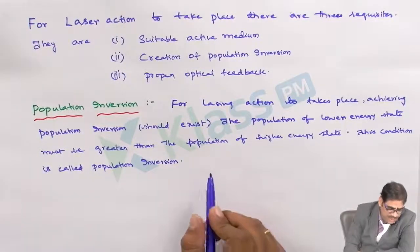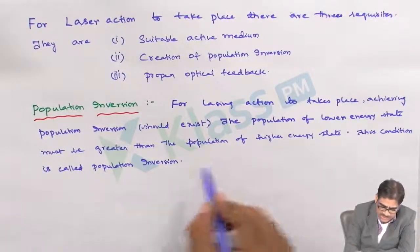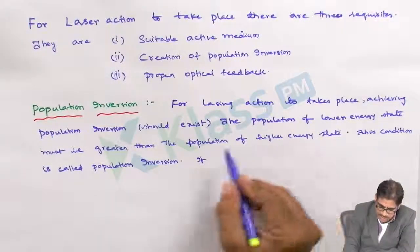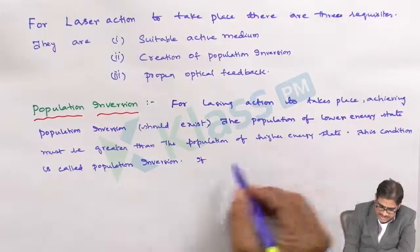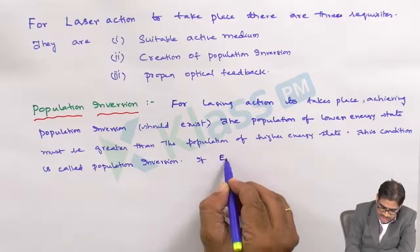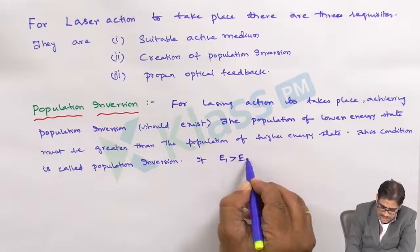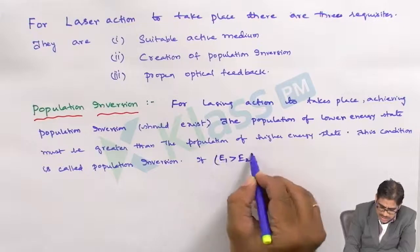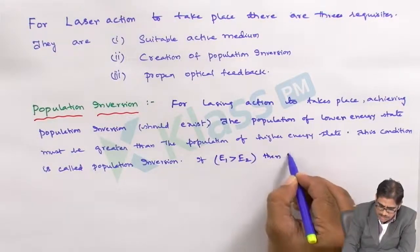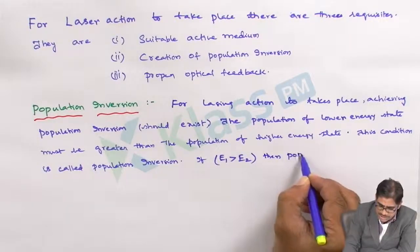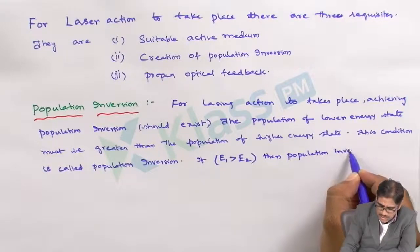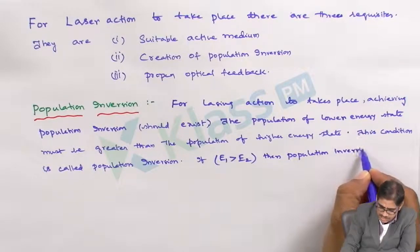Simply, we can say that if the population of energy state E1 is greater than that of E2, then population inversion can be achieved.